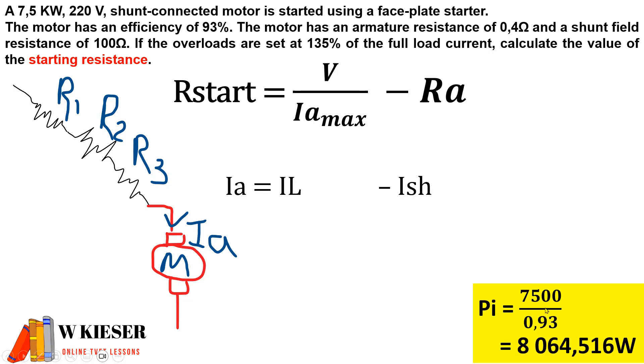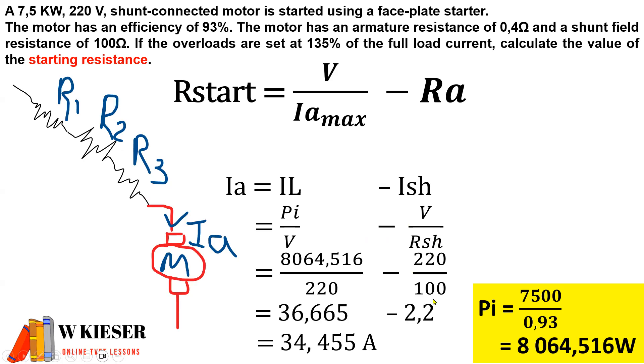Now that we have the input power we can calculate armature current under normal operating conditions. For a shunt motor, Ia is equal to IL minus I shunt, so therefore it will be the input power divided by the terminal voltage less the current through the shunt winding, which is V shunt over R shunt. If we substitute all those values, our armature current under normal conditions is 34.455 amps.